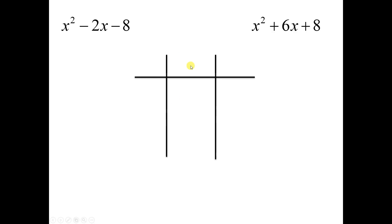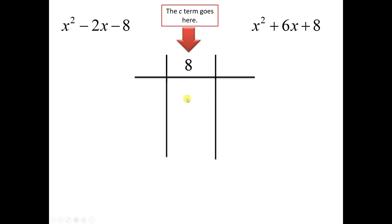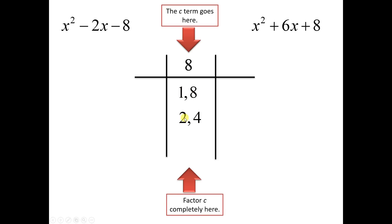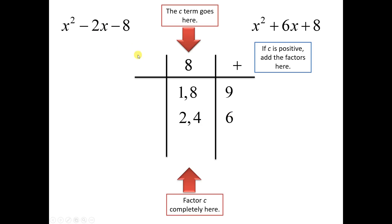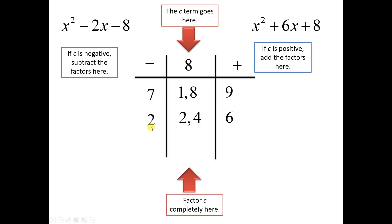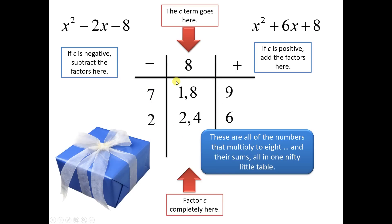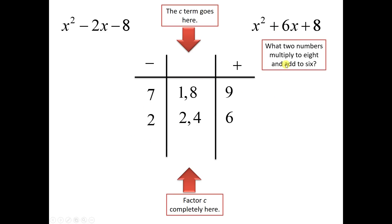What I do is make a chart. What goes in the middle is the C term — for both of these examples, C is 8. In the middle column we factor C: these are the pairs of numbers that multiply to 8. Over here, if C is positive, all you have to do is add these factors: 1 plus 8 is 9, 2 plus 4 is 6. For a problem with a negative, you subtract the factors: the difference of 8 and 1 is 7, the difference of 4 and 2 is 2. So in one chart you see all pairs that multiply to 8, what they add to, and what their differences are. Then just look for the B term, and you're done. For this problem, we want two numbers that multiply to 8 and add to 6 — that's 2 and 4 — so the answer is x plus 2 times x plus 4.